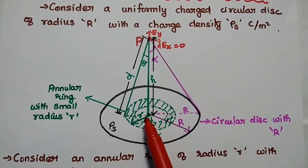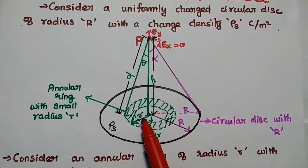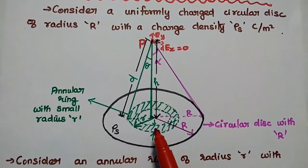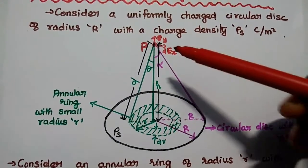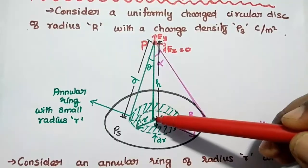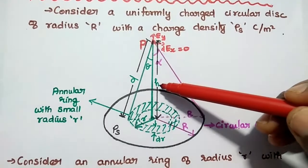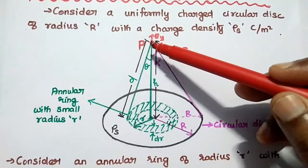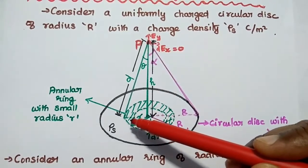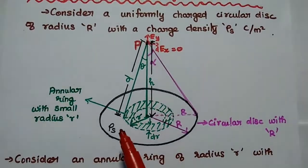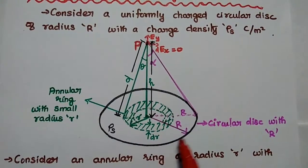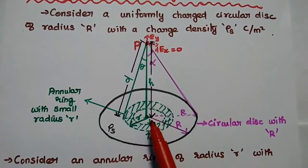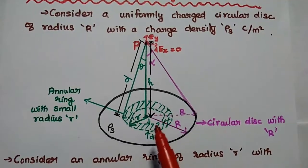Also consider an annular ring with a radius small r and thickness dr. For analyzing the electric field intensity, we are going to take a point P on the axis of this disk at a distance h from its center. Here d represents the distance between the point and the annular ring. We are going to derive the electric field intensity due to this entire circular disk, so first we analyze the electric field due to this small annular ring.